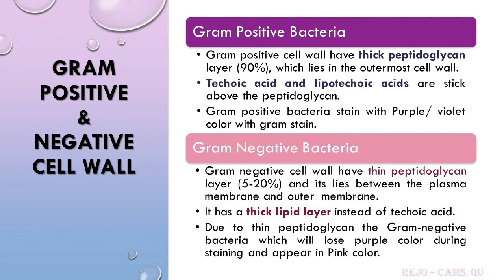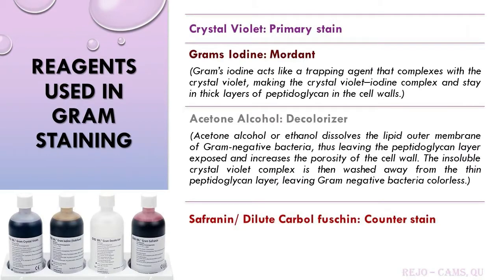There are four different reagents used in the gram stain. The first reagent is crystal violet, which acts as the primary stain. The second is Gram's iodine, which acts as a mordant — a trapping agent that complexes with the crystal violet, forming a crystal violet-iodine complex that stays in the thick layers of peptidoglycan in the cell walls.